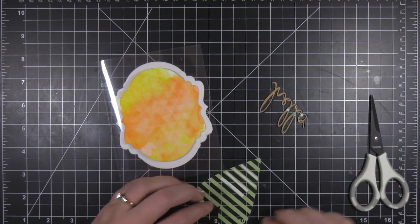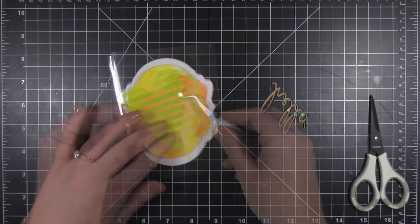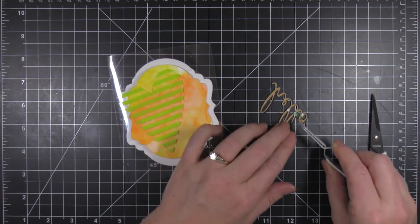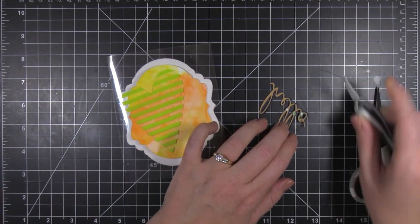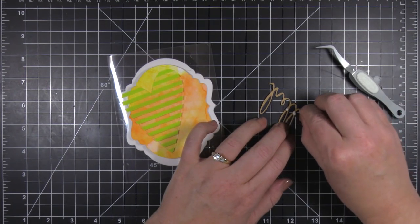And lucky for me, the foam tape, you could not see it at all behind those stripes. So I went ahead and cut some more down, positioned it all behind those stripes and I kind of positioned it to the lower half where I knew that the sentiment would kind of draw the eye away from it anyway.